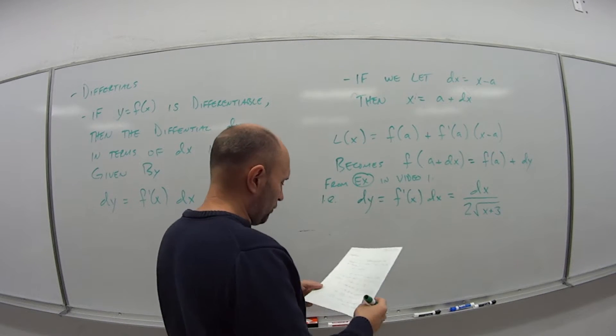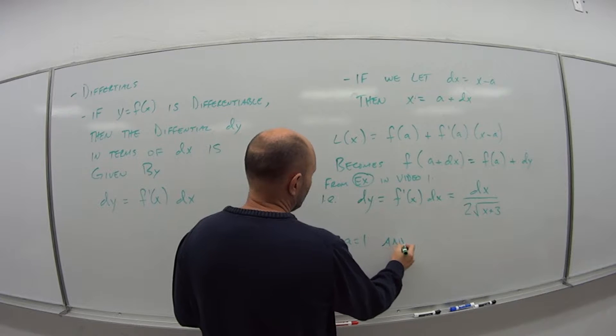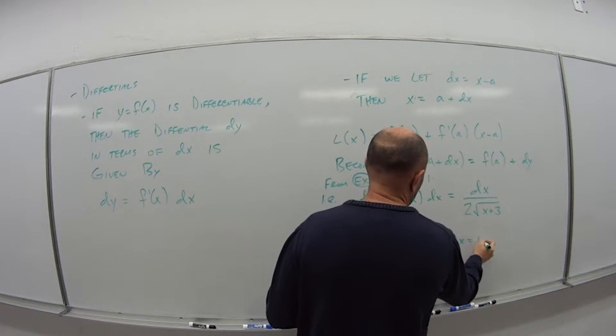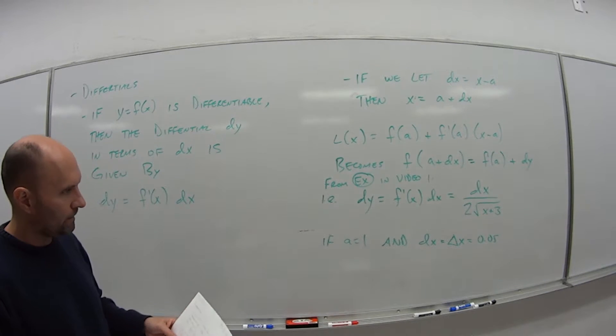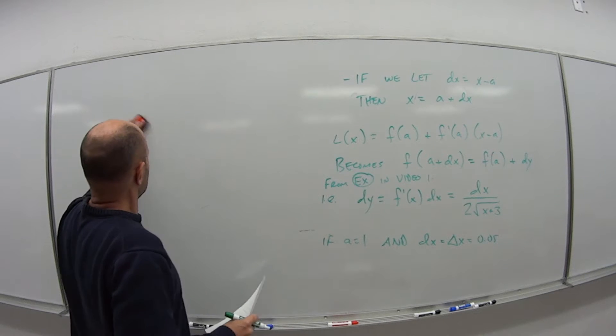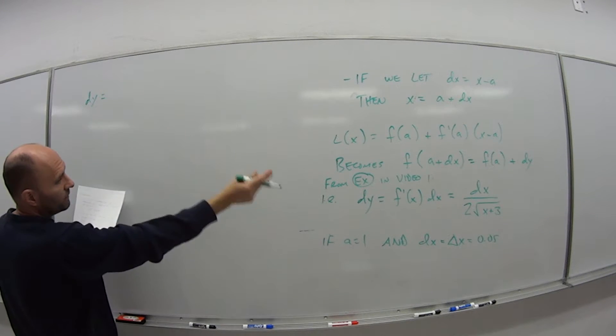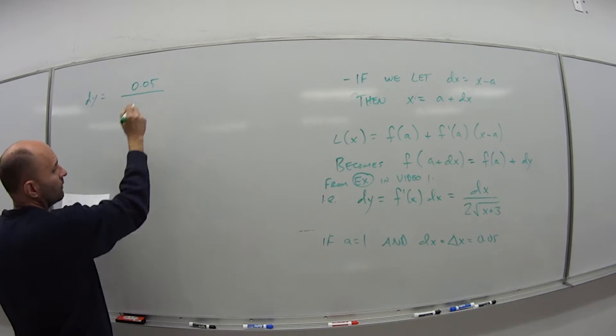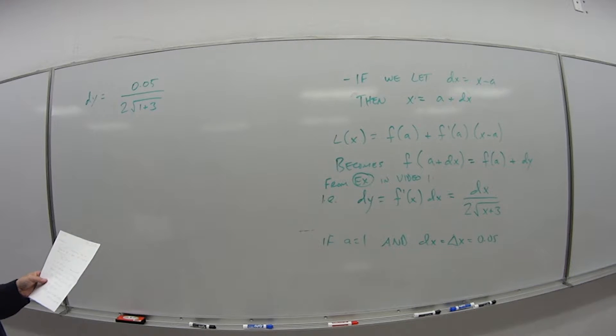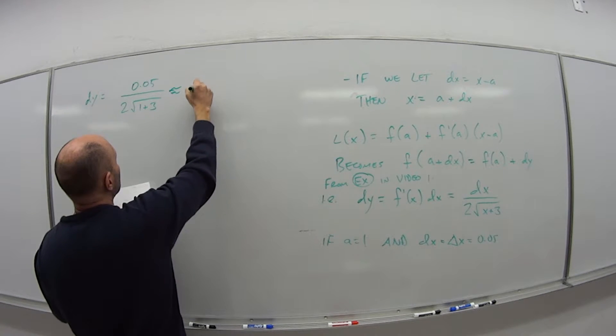And we had that a is equal to 1. So if a equals 1, again this was from the previous example. And if we say that dx, so the change in x is equal to 0.05, we'll see why we get this. So if I plug this in, we get dy is equal to 0.05 all over 2 times a, which is 1, so 1 plus 3. So if I calculate this, this is approximately 0.0125.